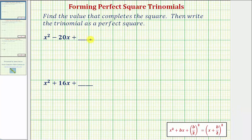We want to find the value that completes the square for each trinomial and then write the trinomial as a perfect square.